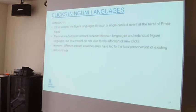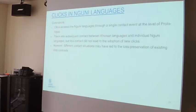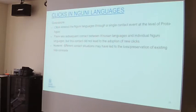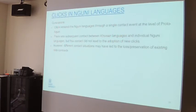To conclude about clicks in Nguni languages: clicks entered the Nguni languages through a single contact event at the level of Proto-Nguni. Even though there was subsequent contact between Khoisan languages and individual Nguni languages — as evidenced by loanwords not shared across the whole group — this contact did not lead to the adoption of new clicks. Contact may have played a role in different levels of attrition in a more indirect sense: having click-speaking neighbors helps you preserve your click inventory, so contact after Proto-Nguni may have influenced how much individual languages simplified their click systems, rather than adding new phonemes.